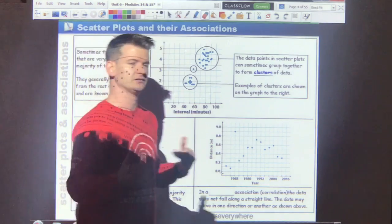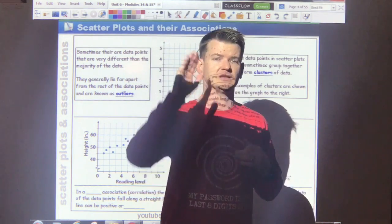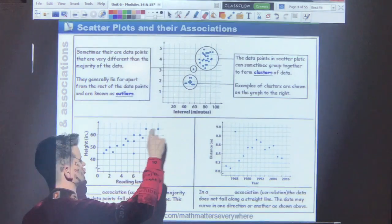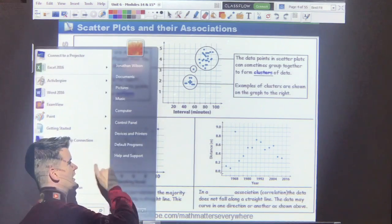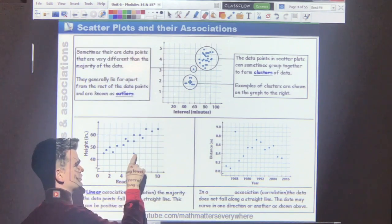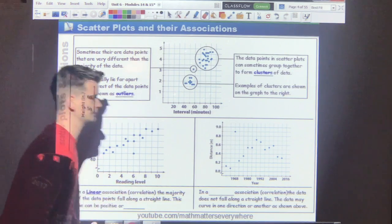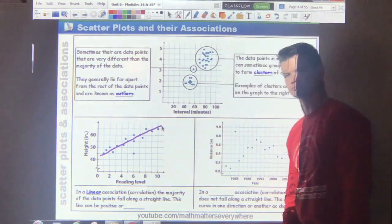In addition to being positive and negative or having no association, data can also be linear or non-linear. When most of the data falls along a straight line, that is known as a linear association. Because most of the data here, with the exclusion of this one outlier, the majority of the data falls along a straight line. And I can draw that right here. For the most part, straight line.